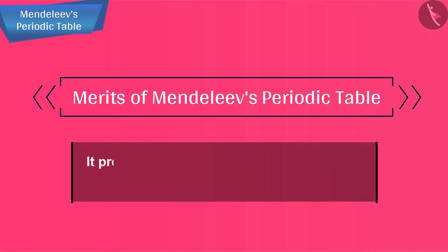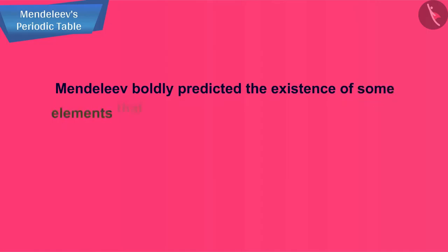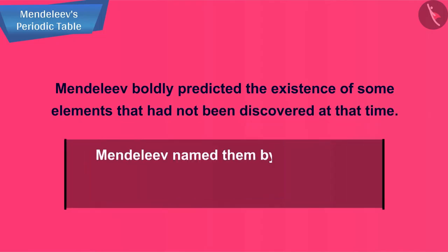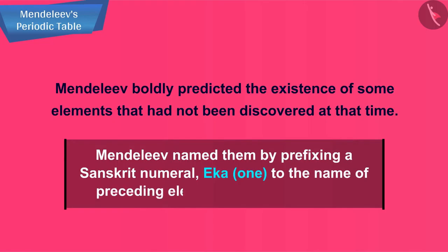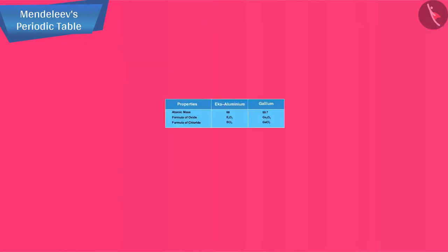It predicted the existence of some elements that had not been discovered at that time. Mendeleev named them by prefixing a Sanskrit numeral Eka, meaning one, to the name of preceding element in the same group. For instance, scandium, gallium, and germanium discovered later have properties similar to Eka boron, Eka aluminum, and Eka silicon respectively.